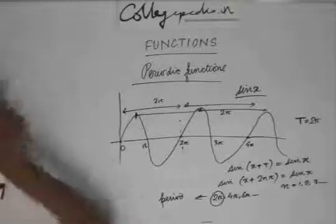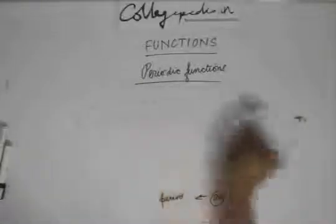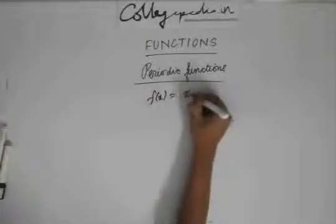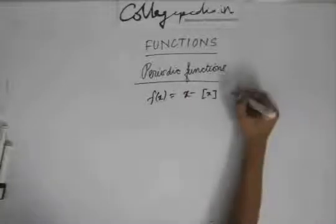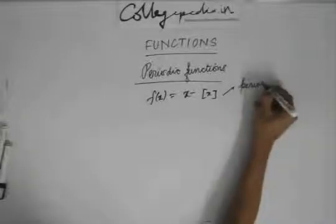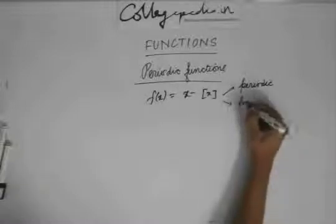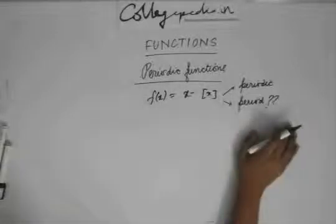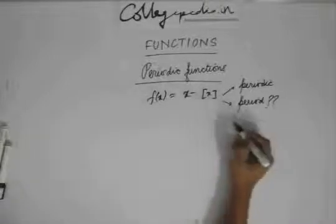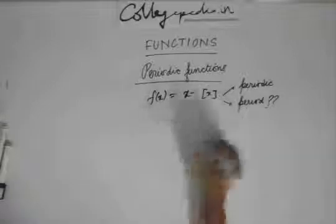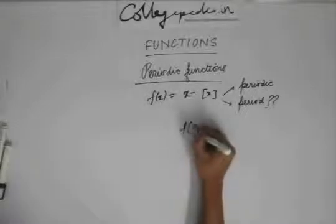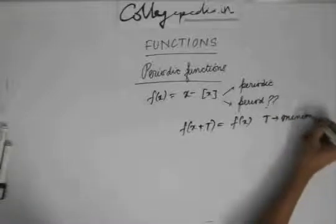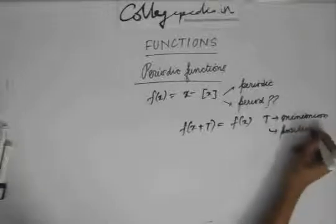Now let's take another example and find the period of this function. Let's say I have a function f(x) = x − ⌊x⌋. The question is: first prove that this is a periodic function, and then find the period of this function. To prove that a function is periodic, we have to prove that f(x + T) = f(x), and we need to find the minimum positive value of T.